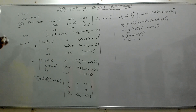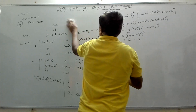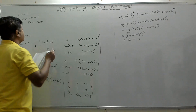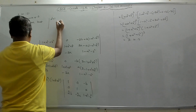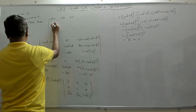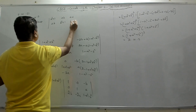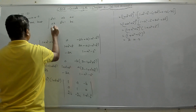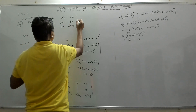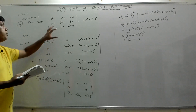Problem 14: prove that the determinant with entries a² + 1, ab, ac in the first row; ab, b² + 1, bc in the second row; ca, cb, c² + 1 in the third row equals 1 + a² + b² + c². We have to show that the value of this determinant is equal to this.